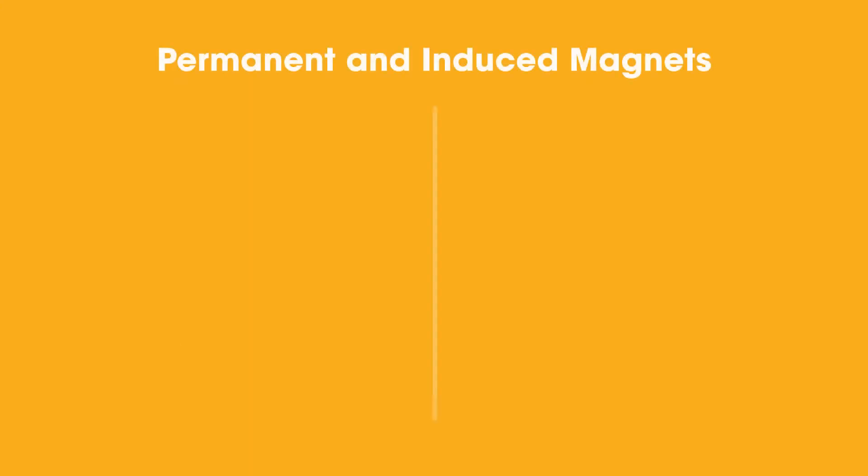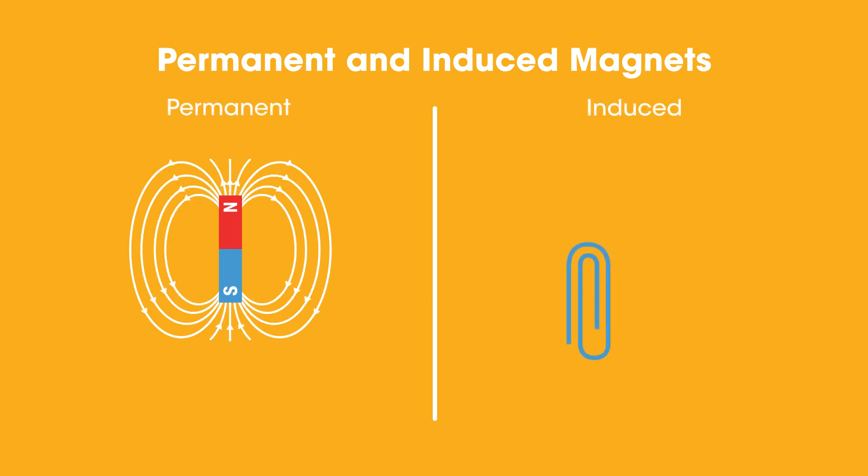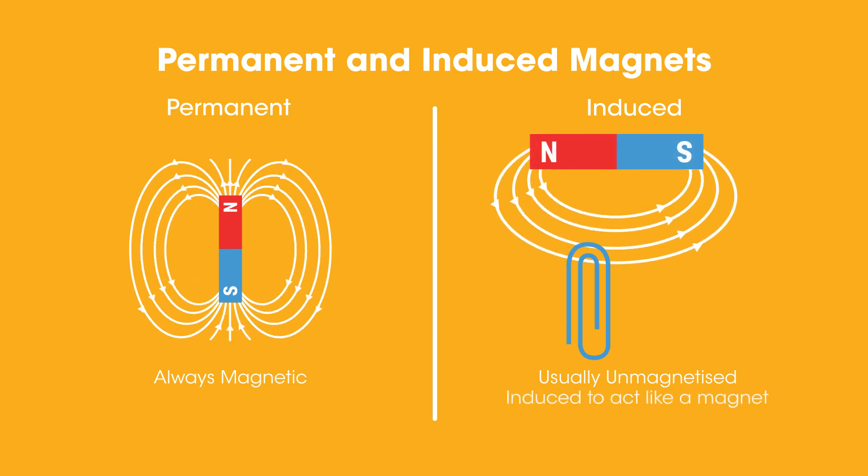There are two different types of magnets: permanent and induced. Permanent magnets are always magnetic, meaning their magnetism can't be turned off. Whereas induced magnets aren't always magnets—they are unmagnetized most of the time. But when placed inside another magnet's magnetic field, they act like magnets and attract.